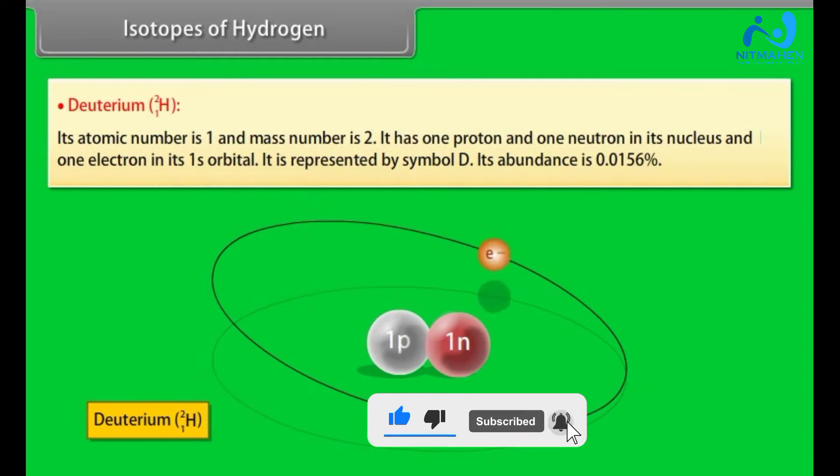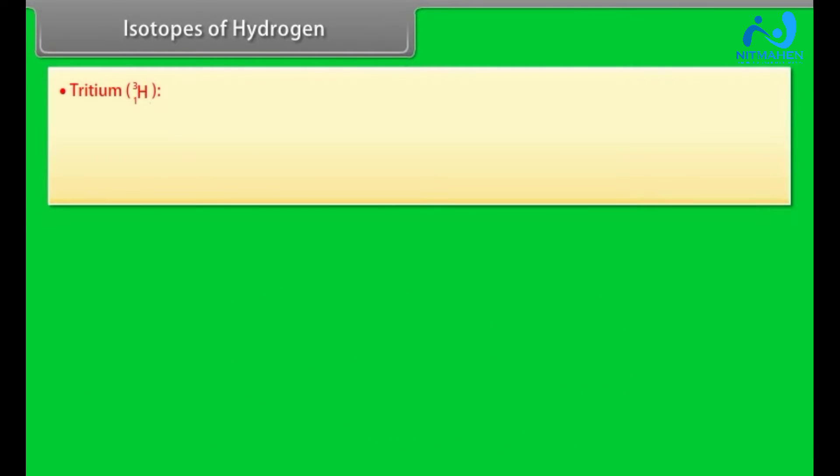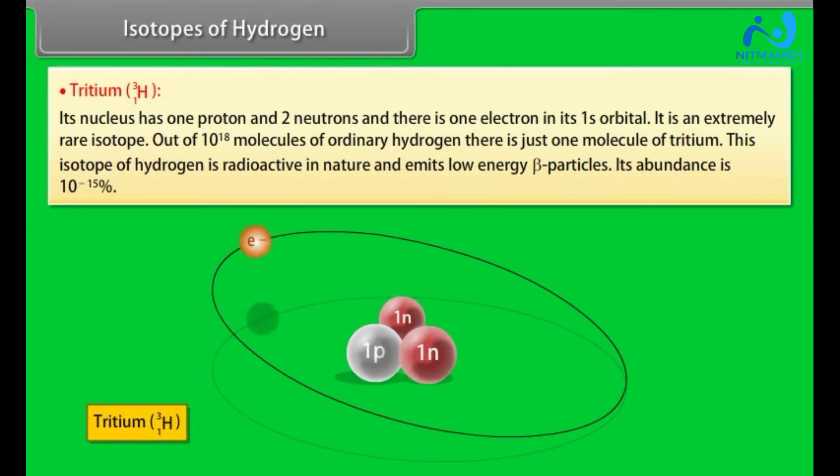Tritium: Its nucleus has 1 proton and 2 neutrons and there is 1 electron in its 1s orbital. It is an extremely rare isotope. Out of 10 to the power 18 molecules of ordinary hydrogen, there is just 1 molecule of tritium. This isotope of hydrogen is radioactive in nature and emits low energy beta particles. Its abundance is 10 raised to the power minus 15%.